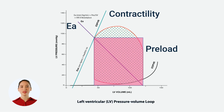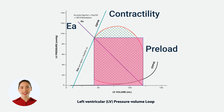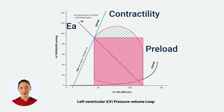That wraps up our detailed look at stroke work on the LV pressure volume loop. Understanding this concept is vital for interpreting cardiac function and guiding treatment decisions. If you found this video helpful, make sure to give it a thumbs up, subscribe to our channel, and hit the notification bell so you never miss an update. Thank you for watching, and we'll see you next time.